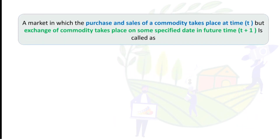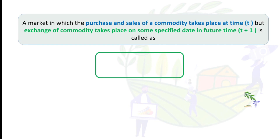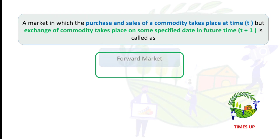A market in which the purchase and sale of a commodity takes place at time T, but the exchange of the commodity takes place on some specific date in the future — time T plus one — is called a forward market.